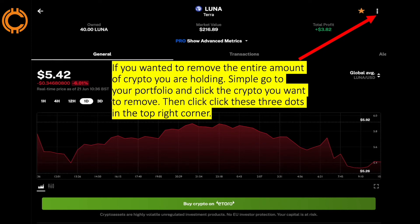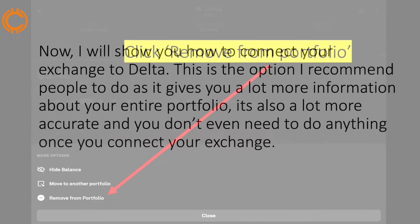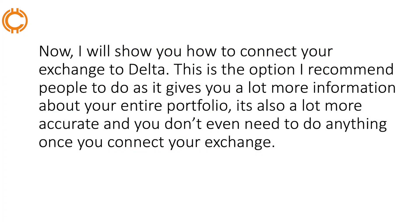As you can see, with manual transactions you have to do absolutely everything yourself — add however much you're holding, and once you've sold, go back onto Delta and tell it how much you've sold. It is very accurate but it does take time. If you want to remove the entire amount of a crypto, go to your portfolio, click the crypto you want to remove, click the three dots in the top right corner, and click 'Remove from Portfolio.' Now I'm going to show you how to connect your exchange to Delta — this is the option I recommend, as it gives you a lot more information and is a lot more accurate.